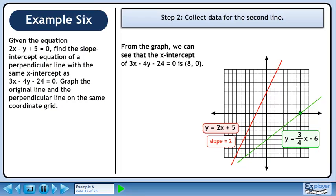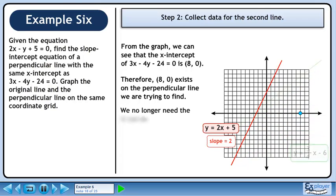From the graph, we can see that the x-intercept of 3x minus 4y minus 24 equals 0 is the ordered pair (8, 0). Therefore, (8, 0) exists on the perpendicular line we are trying to find. We no longer need the green line, so it can be discarded.